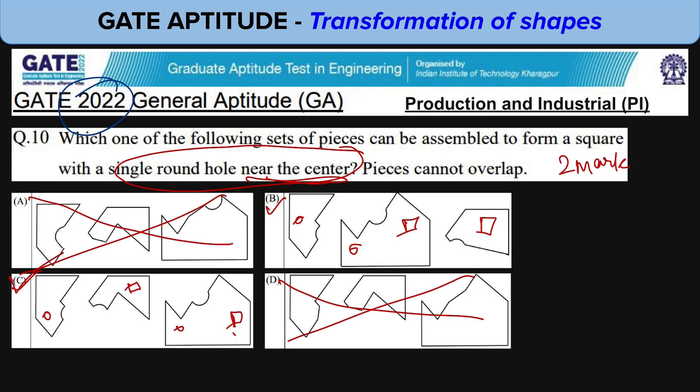The hole is near to the center and all three pieces can assemble without overlap.